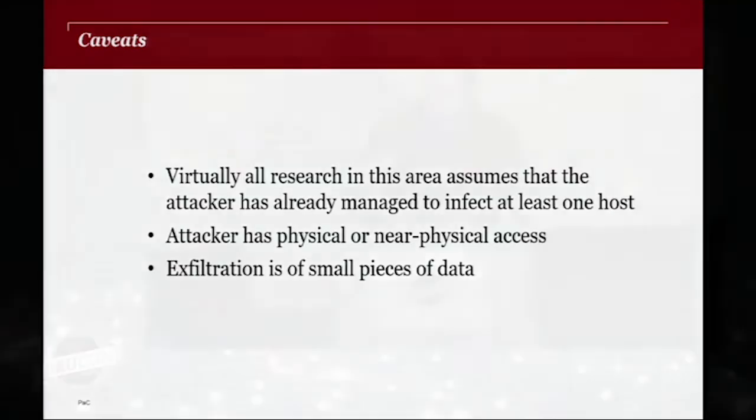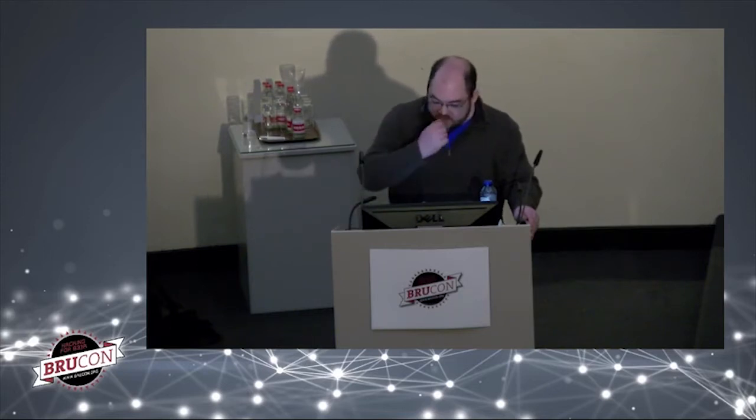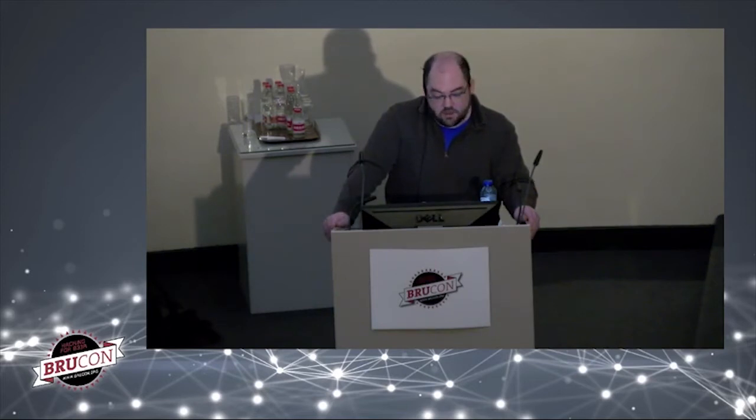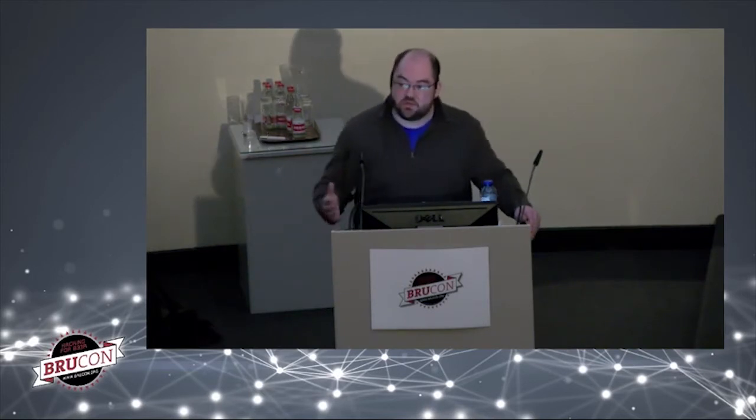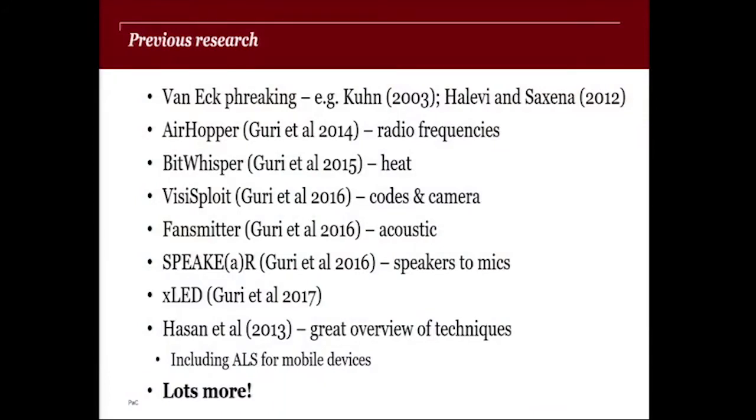And lastly, we assume that the exfiltration that occurs from the air gap machine is quite slow and it's therefore of quite small pieces of data. So we're talking about passwords, encryption keys, rather than gigabytes of stuff. So an example of some of the research that's previously been done in jumping air gaps - I'm not going to go through all of these, but just to give you an idea. At the top, you've got Van Eck phreaking, which originated in the 70s by a Dutch researcher, about the electromagnetic emanations from cathode ray tube monitors. You could sniff those and reproduce what someone was looking at on a monitor. And then you've got lots of work done by researchers at Ben Gurion University in Israel, looking at things like heat and various optical channels to jump air gaps.